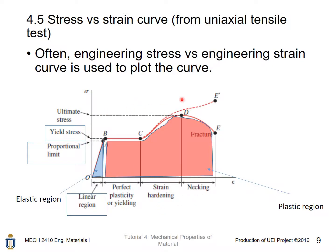The ultimate stress is the maximum stress value that can be applied before fracture. For the CE portion of the curve, the material is brittle. For the CVE portion, it is ductile. In the DE region, the material starts to neck — that is, the cross-sectional area begins to reduce. Finally, at point E, the material fractures.